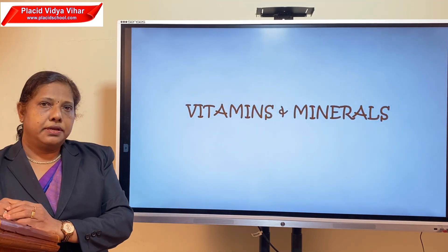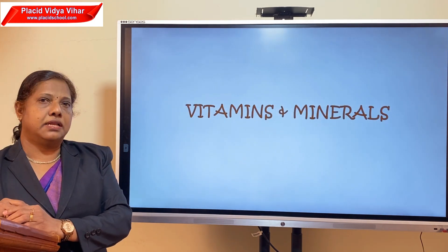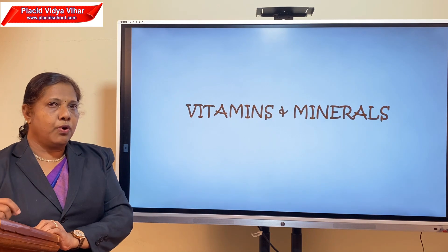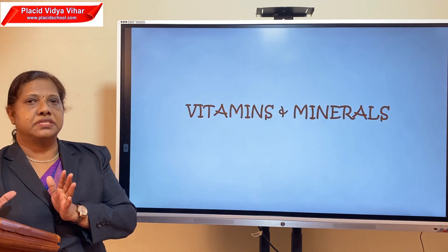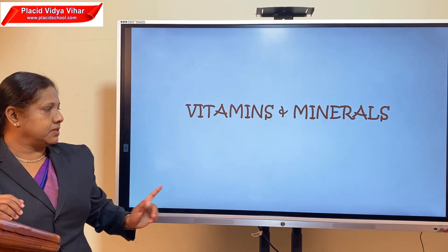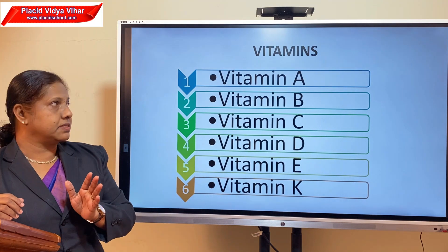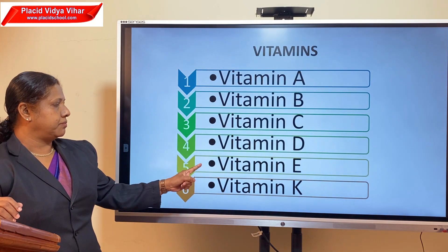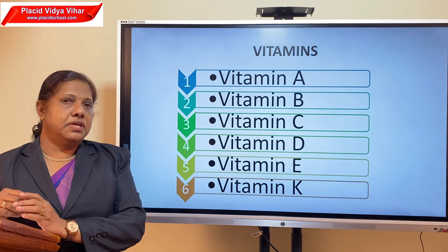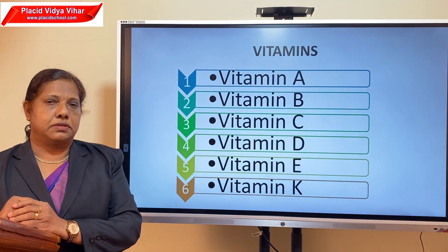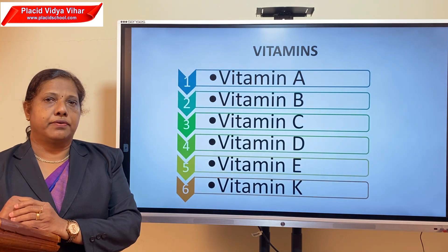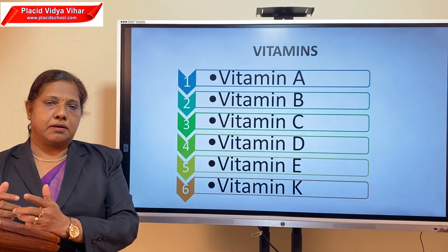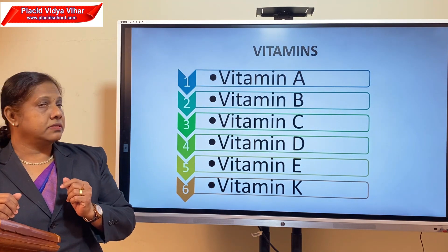Now we can move on to the next two nutrients, that is vitamins and minerals. Vitamins and minerals are needed by our body in very small amounts, but their presence in food is very important. There are six kinds of vitamins — vitamin A, vitamin B, vitamin C, vitamin D, vitamin E, and vitamin K. These vitamins are also called protective foods because they protect our body from diseases. Vitamins also keep our eyes, teeth, gums, and bones healthy.